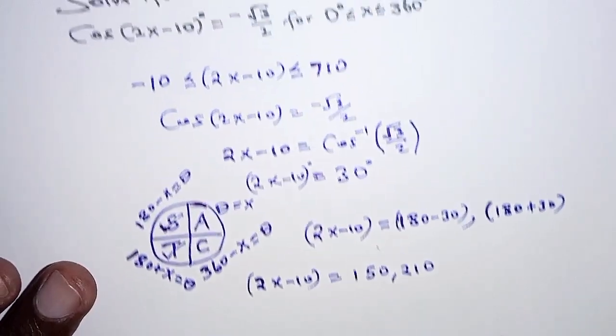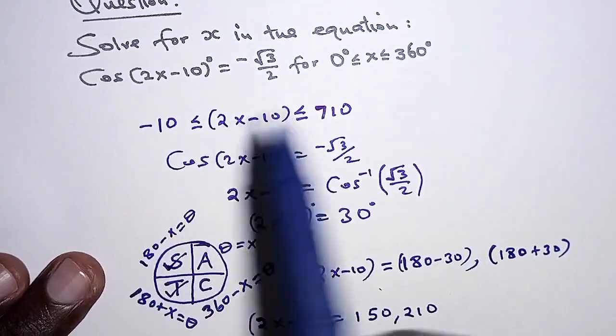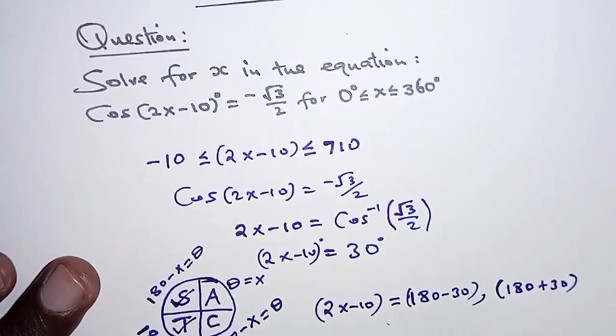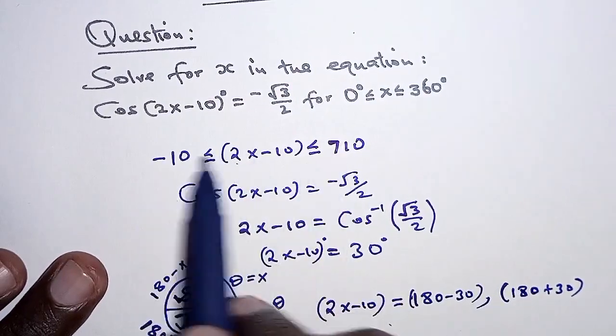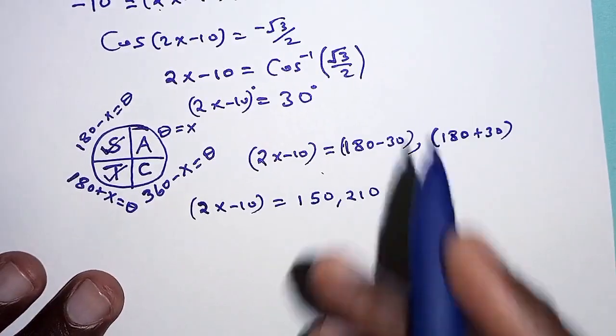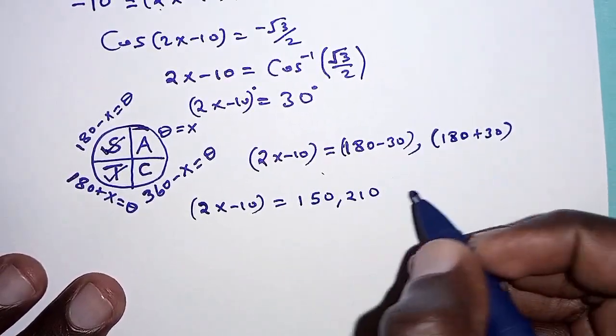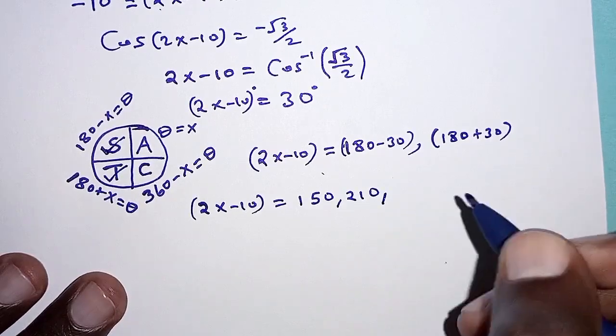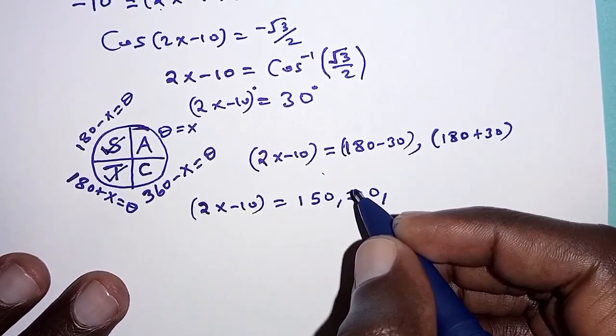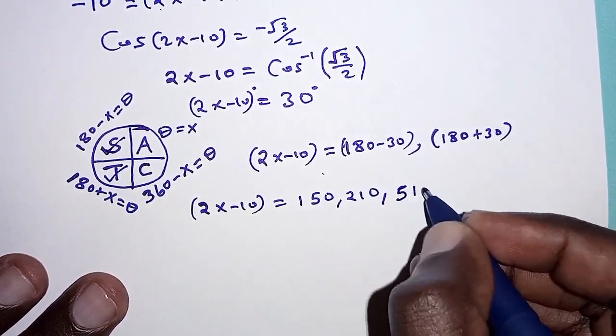Now remember the range that we are given, we are told that the values of 2x minus 10 should be ranging between negative 10 and 710. So we can still continue the listing. Now we can have the next value in the list as 150 plus 360, that should give us 510.